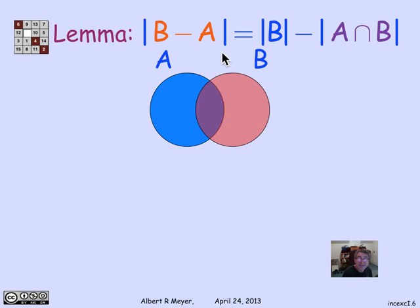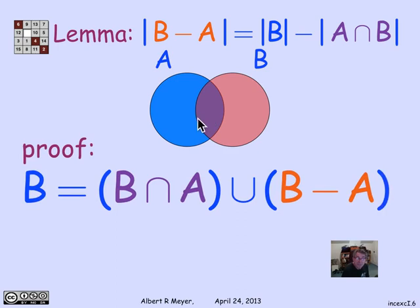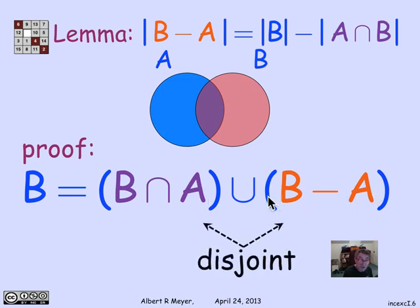Again, we can look at set B broken up into two pieces. B can be expressed as a disjoint union of the part of B that's in A and the part that's not in A. For any set B and any set A, B equals the B points in A and the B points not in A. This covers all cases, and this is a disjoint union.